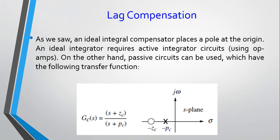We've seen that the design of a PI controller entails placing a pole at the origin. When we place the pole at the origin, the type of the system increases by one, which normally allows us to reduce the steady-state error.